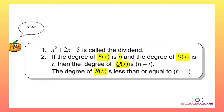Note: x squared plus 2x minus 5 is called the dividend. If the degree of p(x) is n and the degree of d(x) is r, then the degree of q(x) is n minus r. The degree of r(x) is less than or equal to r minus 1.